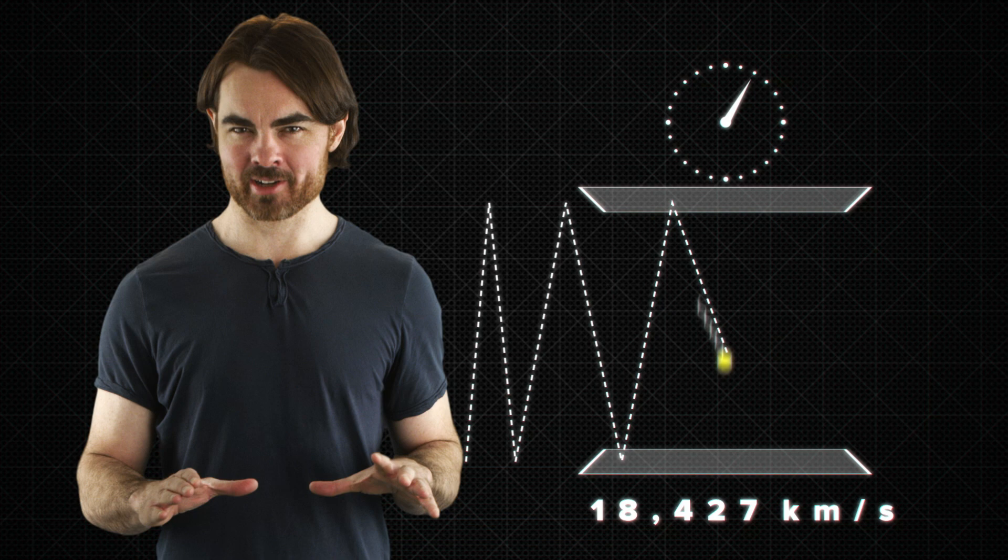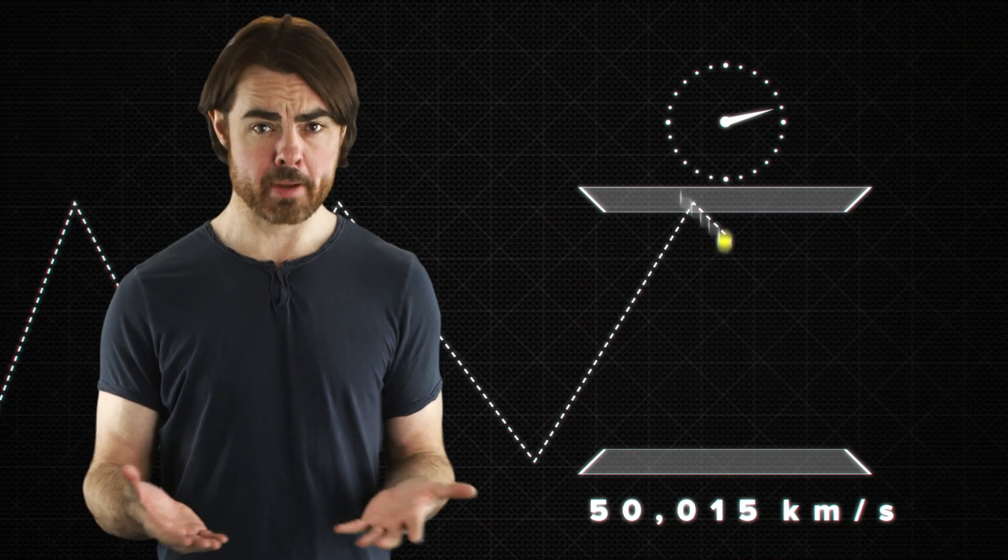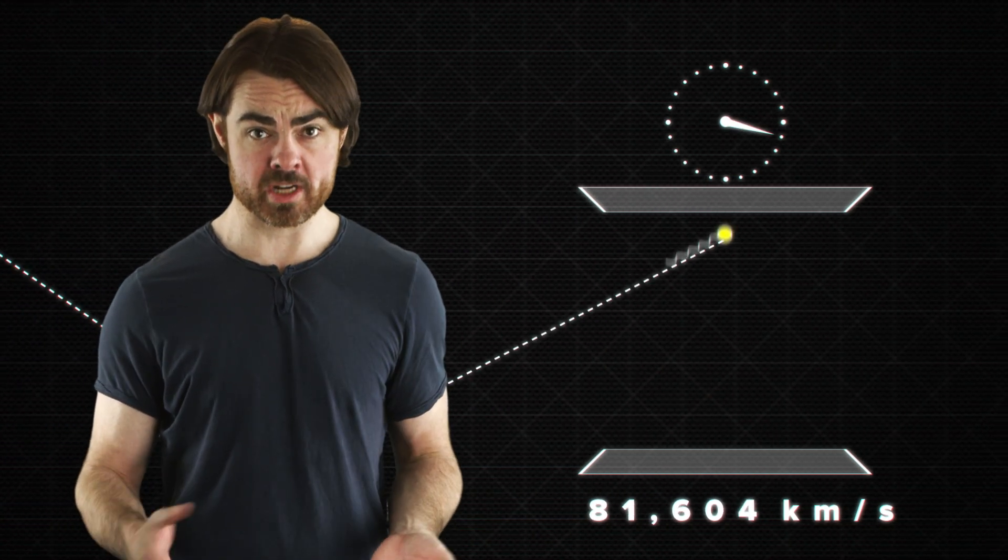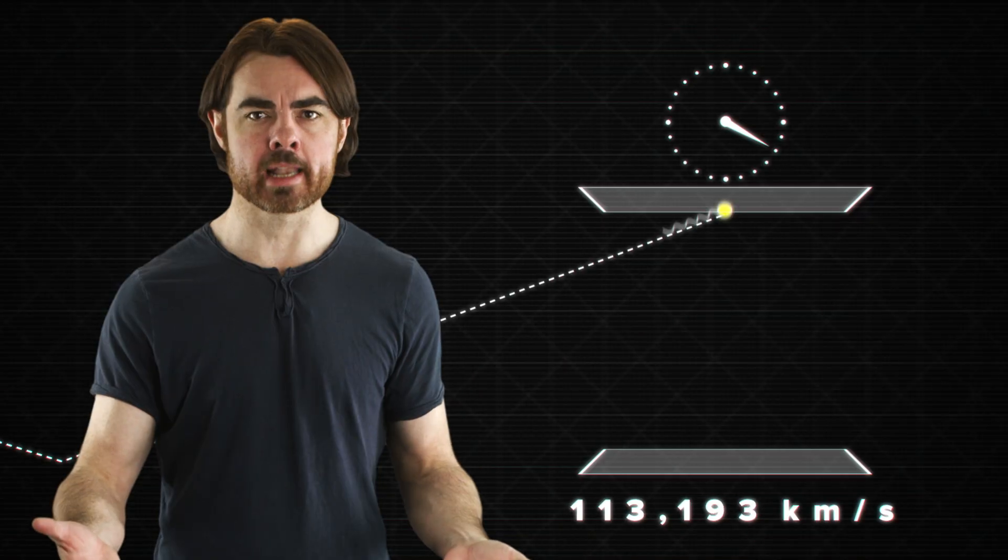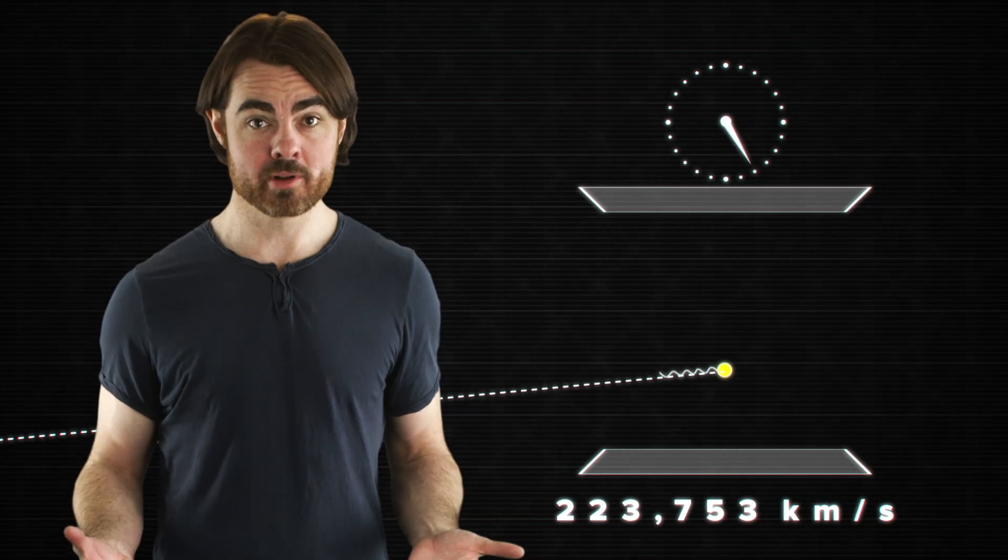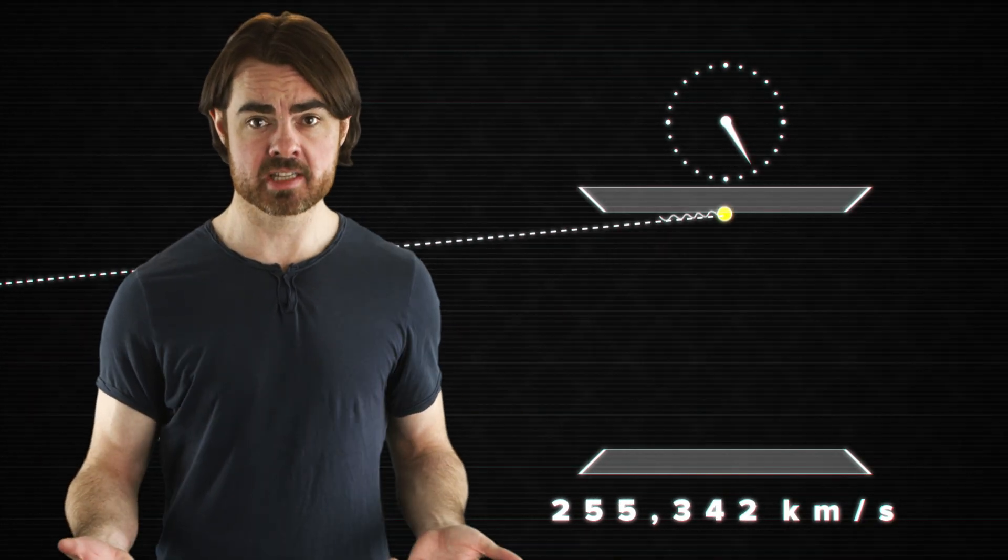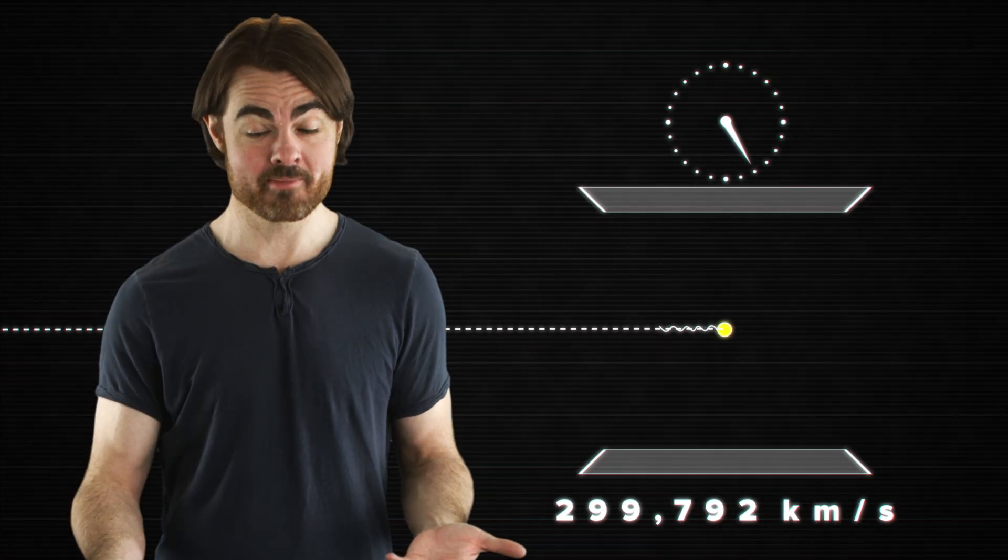Now what if the clock is traveling at the speed of light? The apparent distance that the photon needs to travel to reach that top mirror becomes larger and larger as the clock speed increases, and that distance is infinite when the clock reaches the speed of light. From our point of view, the photon clock can never complete a tick, because the photon can never reach that mirror. Time is frozen.